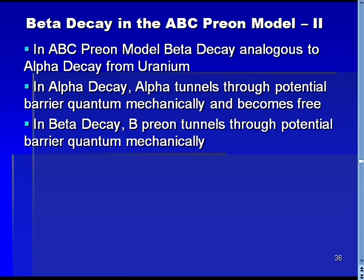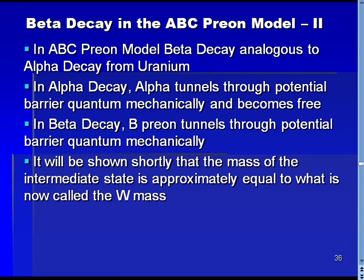In the ABC preon model, we see that beta decay is a similar process, although it also involves pair creation from vacuum. The wave function for the B prion will have a small value at a point far enough away from the C prion that allows formation of a free electron, a free neutrino, and conversion of the neutron to a proton. It will be seen later that the mass of the intermediate state involved in beta decay will sum to about the mass of what is now called the W boson, and hence this process is governed by a propagator that has a mass approximately equal to that of what is now called the W boson.